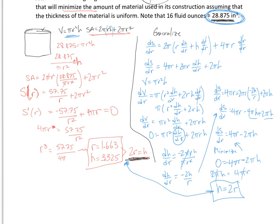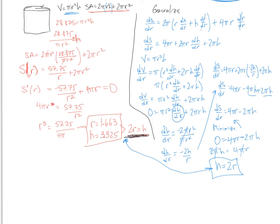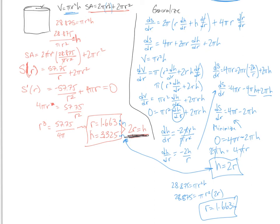So how does that help you? You know that h = 2r in these problems. Since you have the volume, you can just say 28.875 = πr²h, and knowing h = 2r, you get 28.875 = πr² · (2r), solve for r, and get r = 1.663 inches. These cylinder problems all have the same pattern — once you see that the height will be twice the radius, you can always do it. We proved why, did it with the specific problem, then generalized it. Good luck with your optimization!